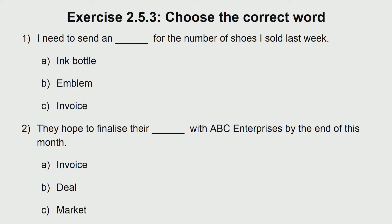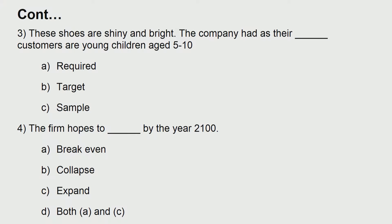Next exercise — choose the correct word. Number 1: I need to send a dash for the number of shoes I sold last week — ink bottle, emblem, or invoice. Number 2: they hope to finalize their dash with ABC Enterprises by end of this month — invoice, deal, or market. Number 3: the company had as their dash customers young children aged 5 to 10 — target, required, or sample. Number 4: the firm hopes to dash by the year 2100 — break even, collapse, expand, or both A and C.